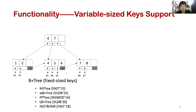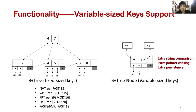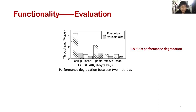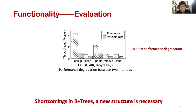For variable-sized keys support, we analyze some existing works, including NVTree, WB+ tree, FP tree, LB+ tree, and FAST+FAIR. Their designs are all optimized for 8-byte keys. Their nodes are restructured and key-value pairs are appended in the nodes. Fixing keys to 8 bytes reduces metadata overhead, reducing persistence overhead. If we want to support variable-sized keys, pointers of keys need to be stored in the nodes, and keys stored in another area. After this modification, the persistent B+ tree suffers extra string comparison, pointer chasing, and persistence overhead. We modified FAST+FAIR using this method and the performance was degraded by 1.8 to 3.9 times. A data structure that naturally supports variable-sized keys is desired. Thus, this paper proposes a range query-optimized adaptive radix tree.